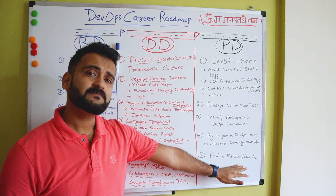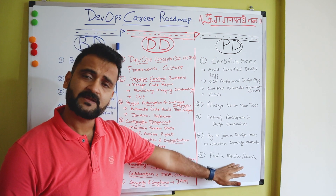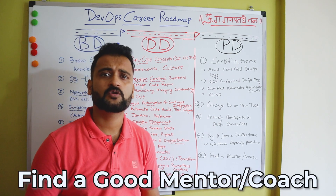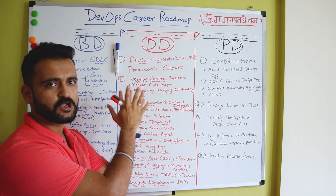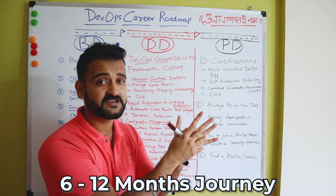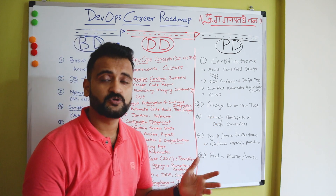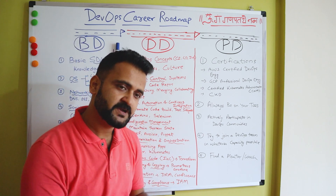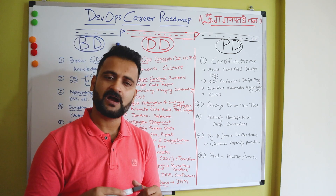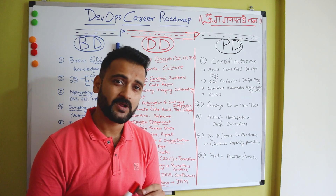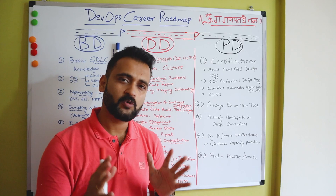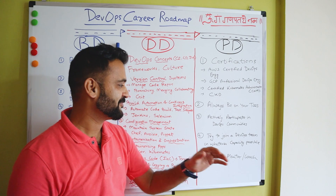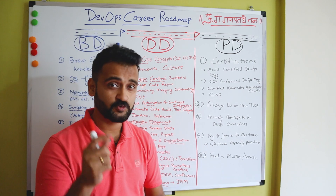Fifth, find a good mentor or coach who can guide you on this journey. This is almost a six to twelve month journey — it's not a one-month program. There will be times when you dip and feel like giving up, and at those points you need a mentor or coach to support you and tell you that it's okay to not be okay. So find one, and if you're lucky enough, you'll get one.